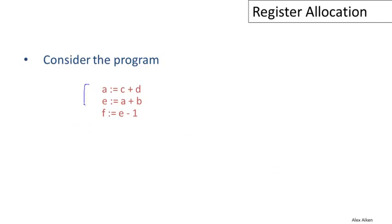It's a simple three-statement program. Notice here that A is used in the first two statements. It's written in the first statement, read in the second statement. E is written in the second statement and read in the third statement, and F is only written in the third statement.